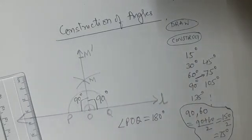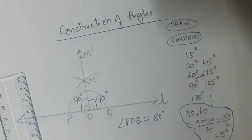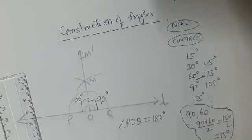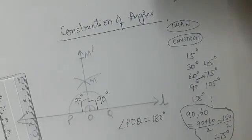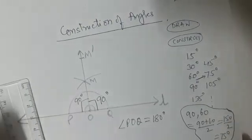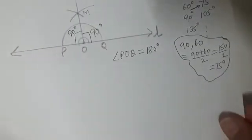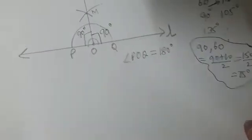Similarly, M'OP on the left side will also be 90°. We have constructed an angle of 90° by bisecting 180°. There is also another way of constructing 90° — let us have a look at it.